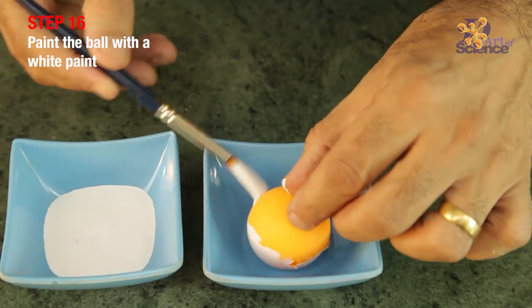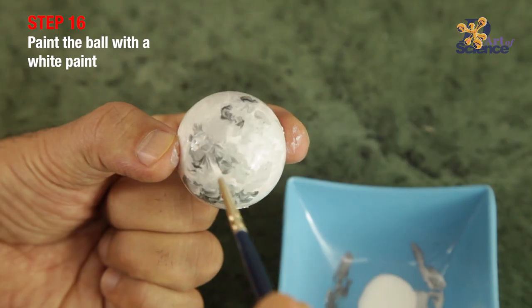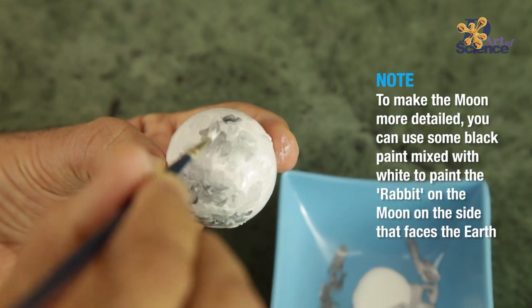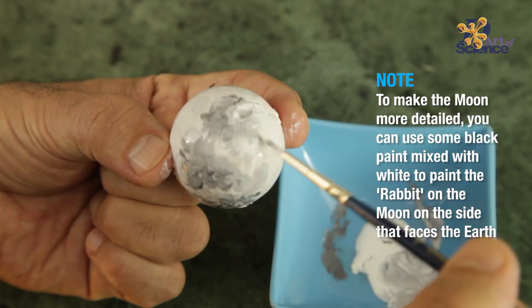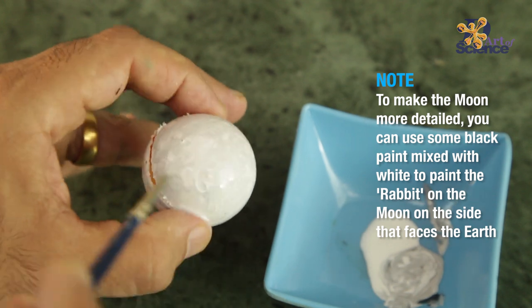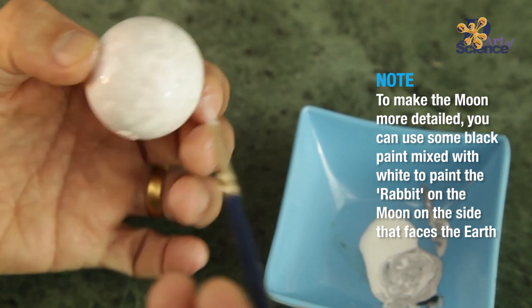Now you could paint the ball white and if you want to make it more detailed then use a picture of the moon from the video and then make the rabbit as well using a little bit of black mixed with white. But this needs to be done on the opposite side of the cut so that it faces the earth.